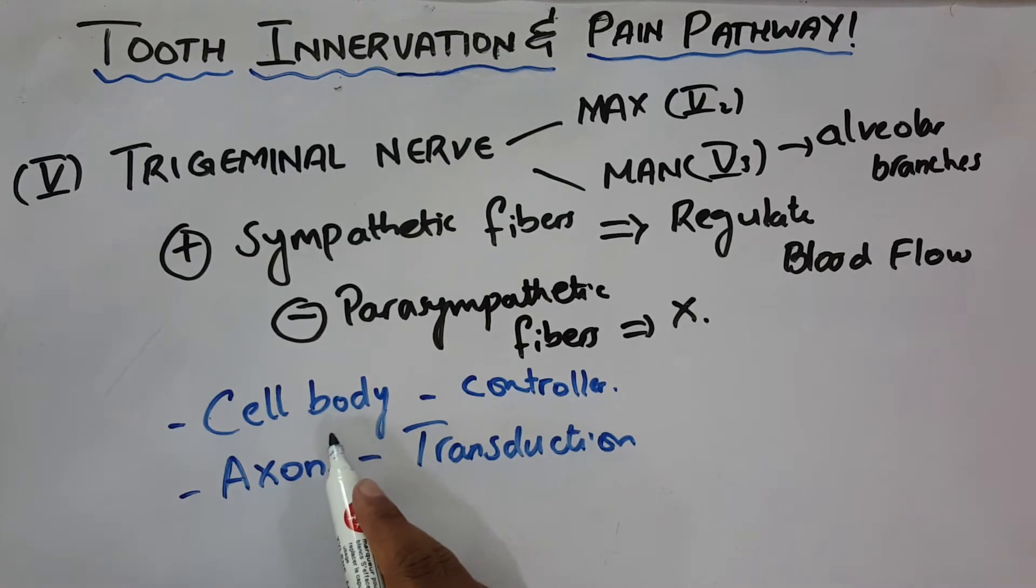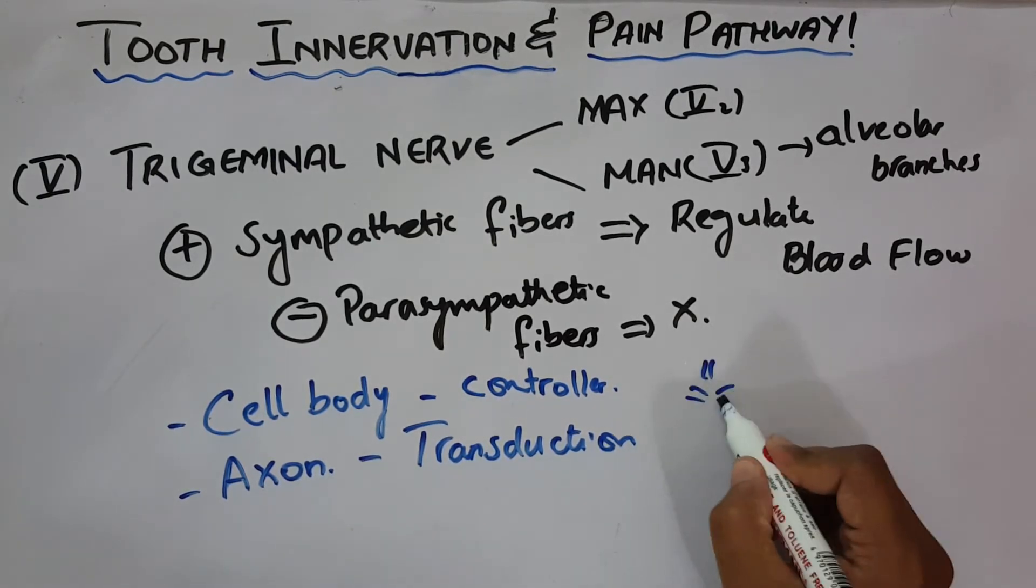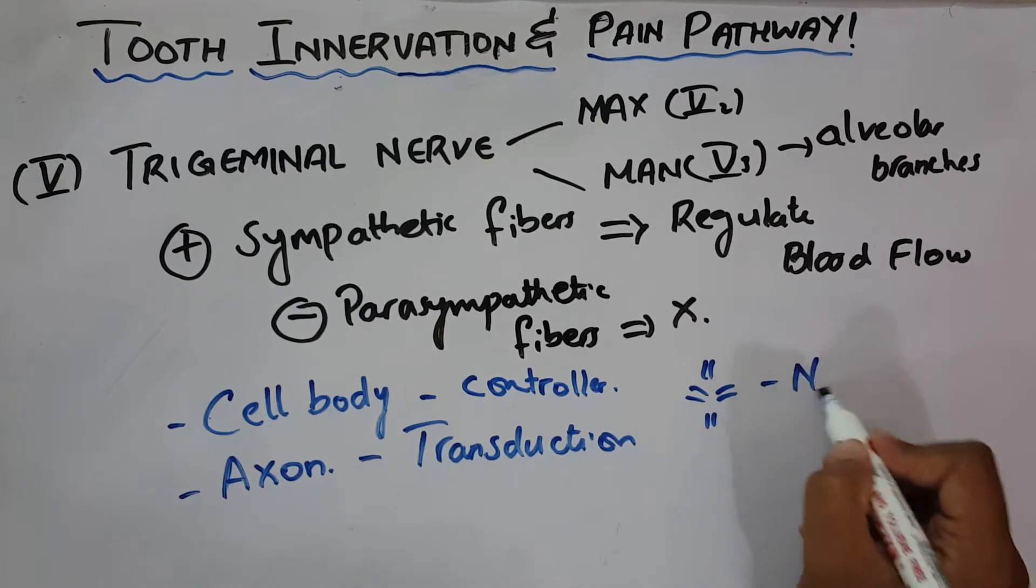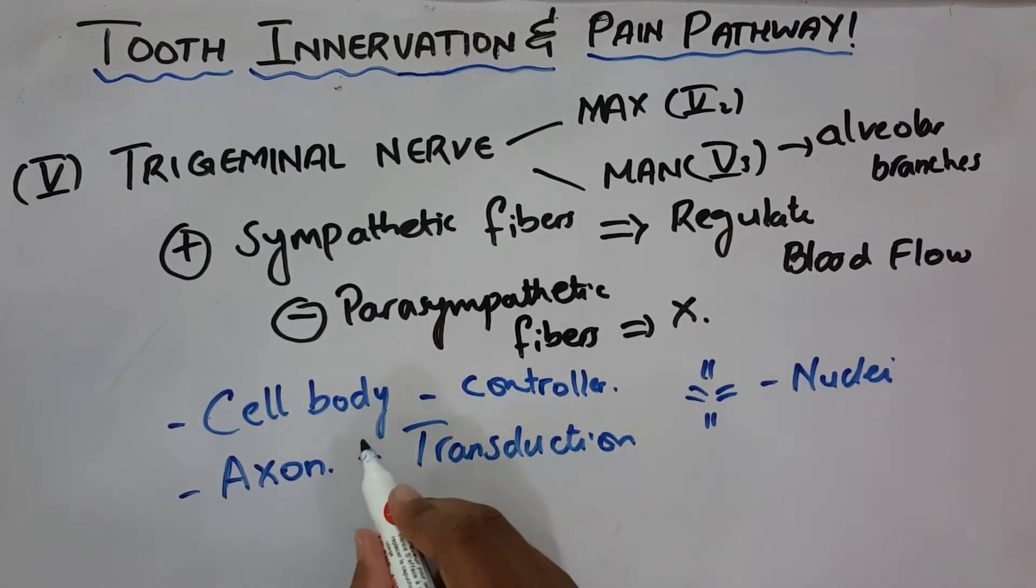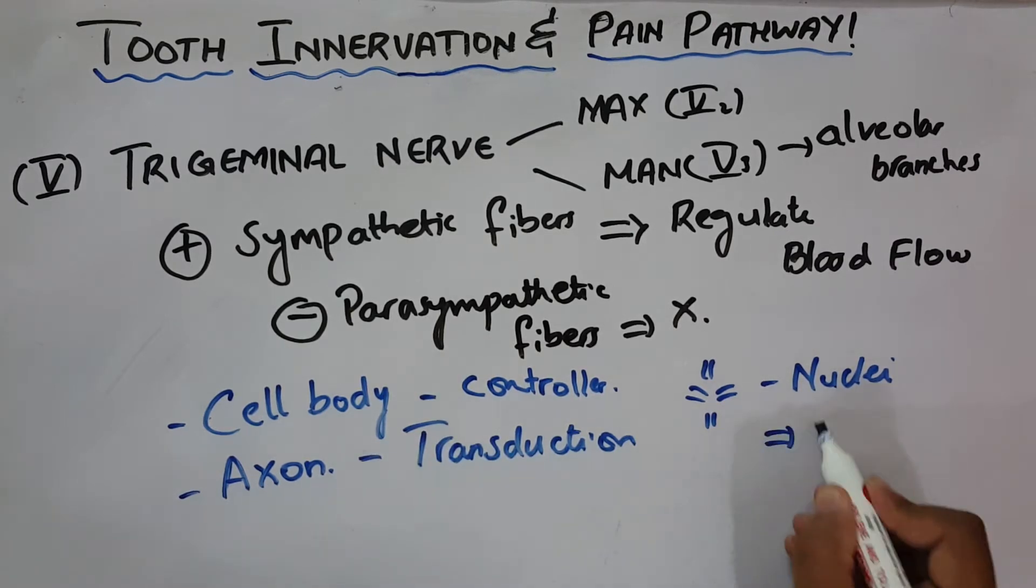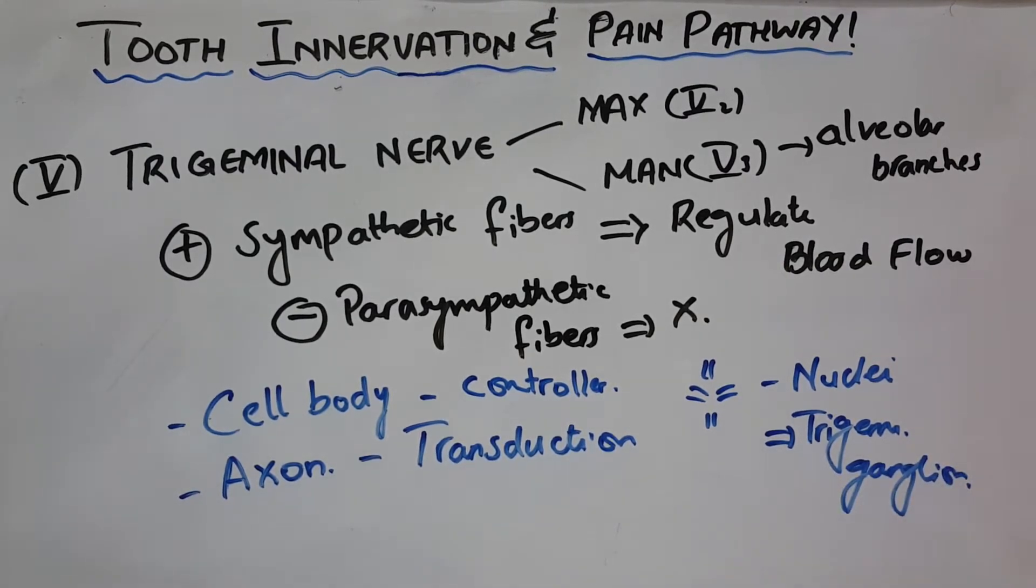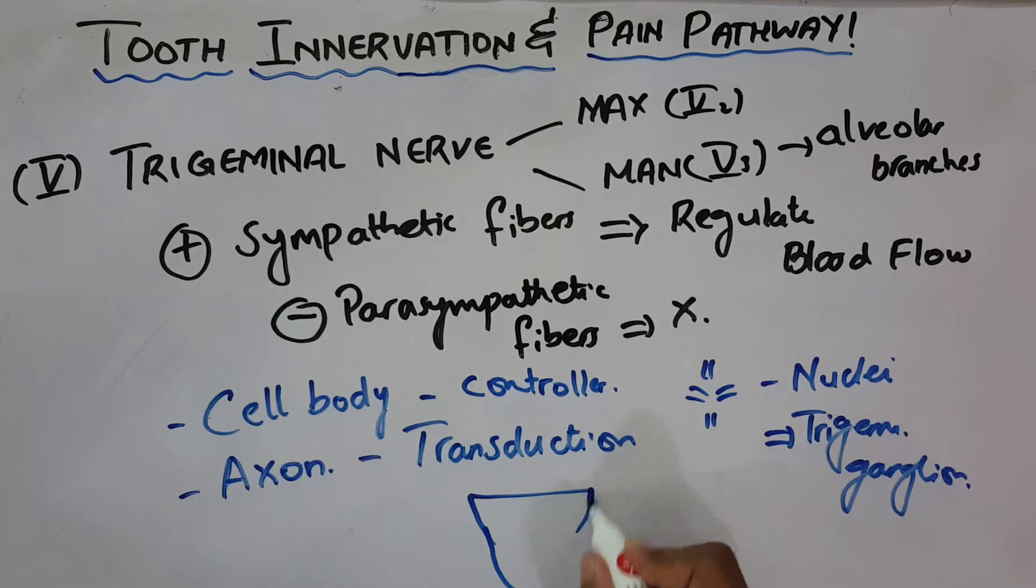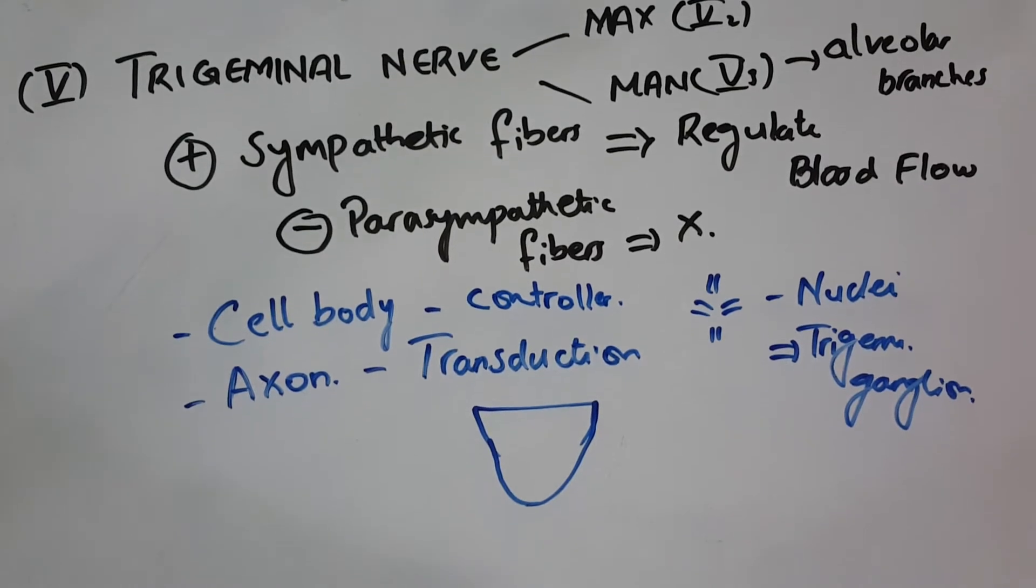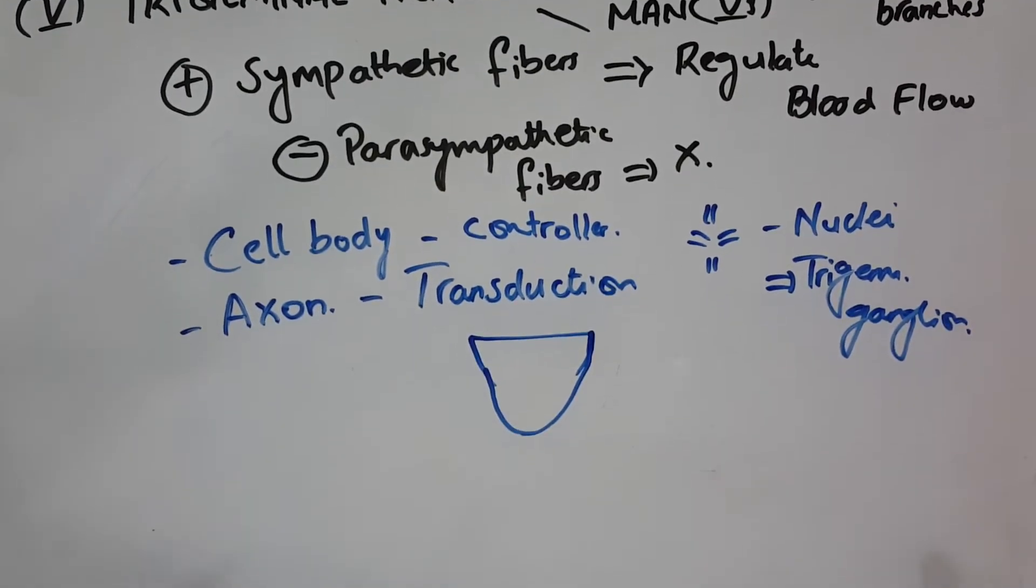The cell bodies, when present in clusters, are known as nuclei. The cell bodies of the trigeminal nerve are located in the trigeminal ganglion. This is a very important concept, and all of you must know the basic structure of the nerves which enter the tooth.